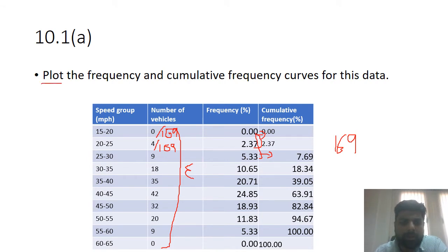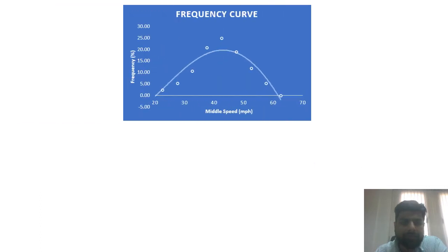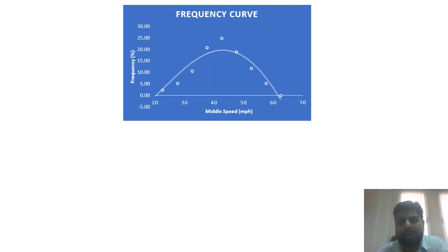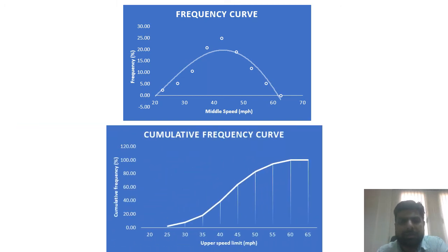I have done the plotting in the next slide. This is the frequency distribution plot — on the x-axis is the middle speed for each speed group, and on the y-axis is the frequency. The points are not directly joined; instead, a best-fit line is plotted. I used Excel's trend line option to plot this best-fit curve.